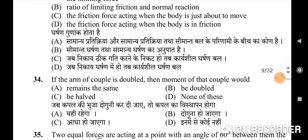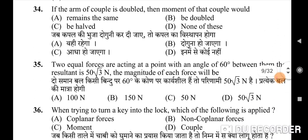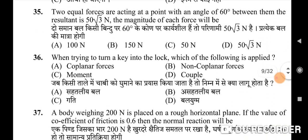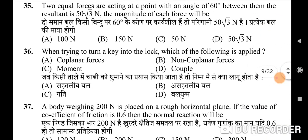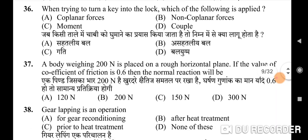Thirty-fourth question: if the arm of a couple is doubled, then the moment of that couple would — correct option is B: be doubled. Thirty-fifth question: two equal forces are acting at a point with an angle of 60 degrees between them; the resultant is 50√3 N. The magnitude of each force — correct option is C: 50 Newton.